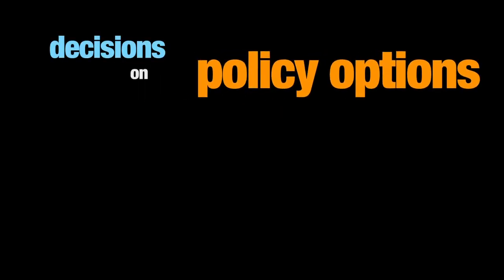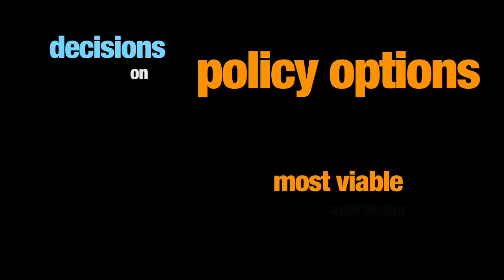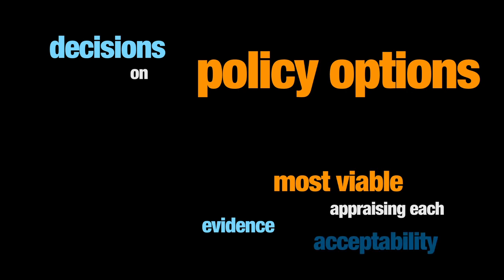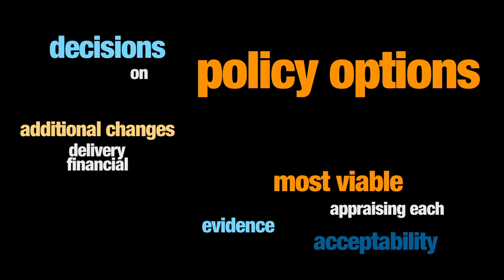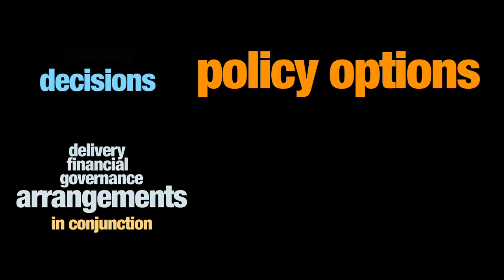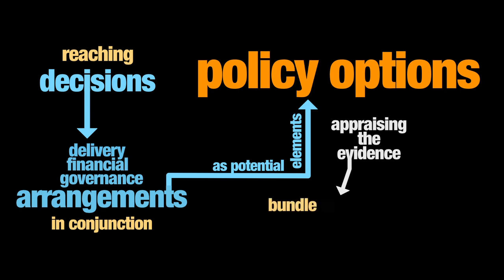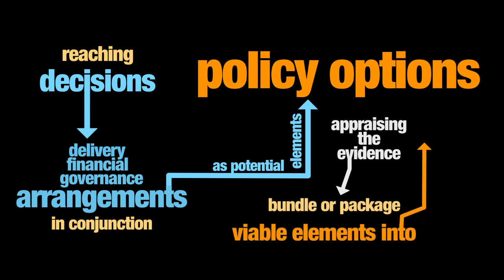Teams may reach decisions on the policy options in different ways. They may first consider a broad range of options, then narrowing the selection down to the most viable ones by appraising each on the basis of evidence and acceptability. They may then examine what additional changes in delivery, financial and governance arrangements might be needed. Another approach involves considering potential delivery, financial and governance arrangements as potential elements of policy options, and then appraising the evidence for those elements. Teams would then determine whether and how to bundle or package viable elements into policy options.